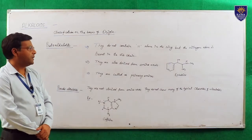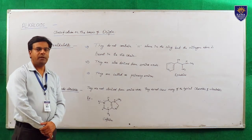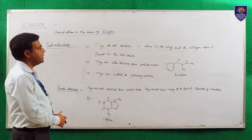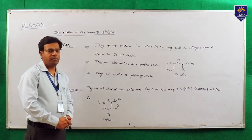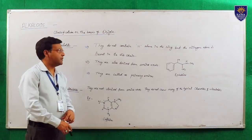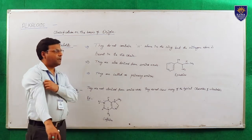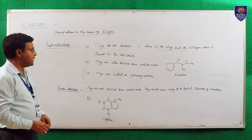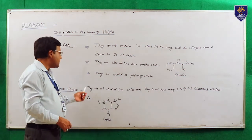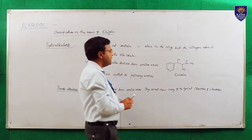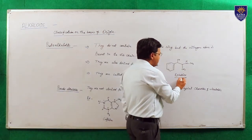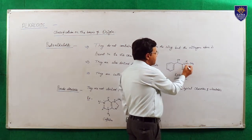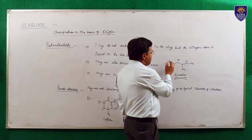Protoalkaloids, as the name indicates, are primary amines derived from amino acids. They do not contain a nitrogen atom in the ring, but nitrogen is present in their side chains. They are also derived from amino acids and are called primary amines. As you can see in the structure of ephedrine, the nitrogen is present in the side chain, not in the ring.